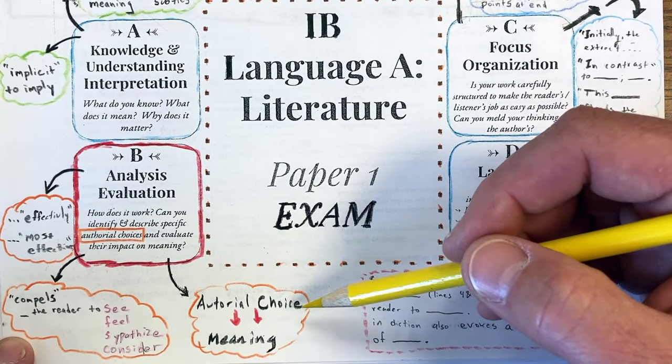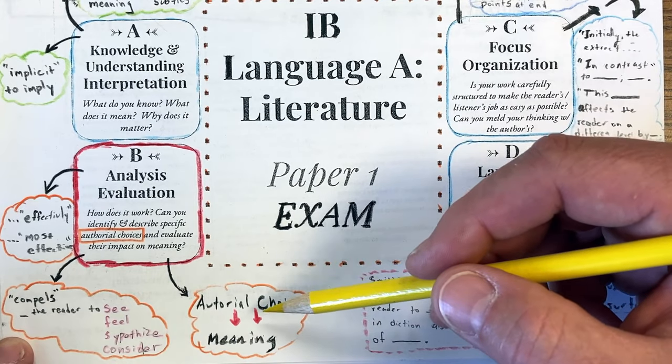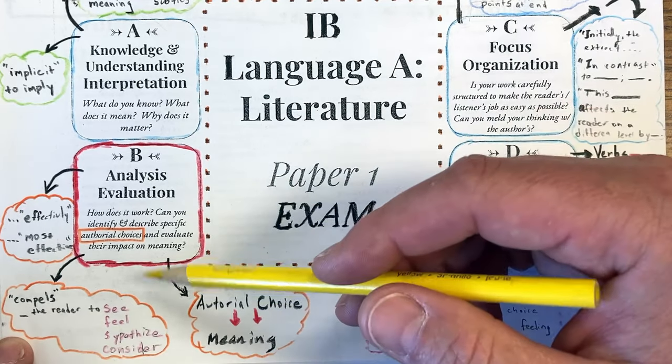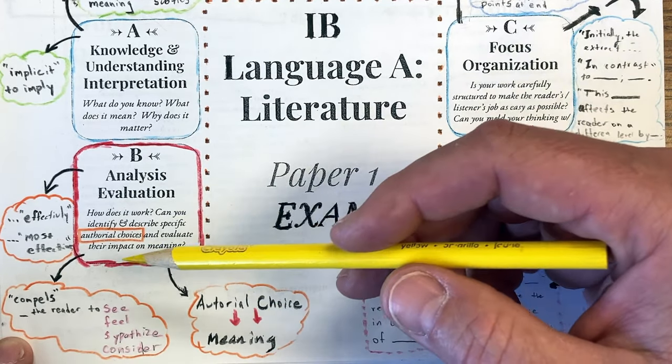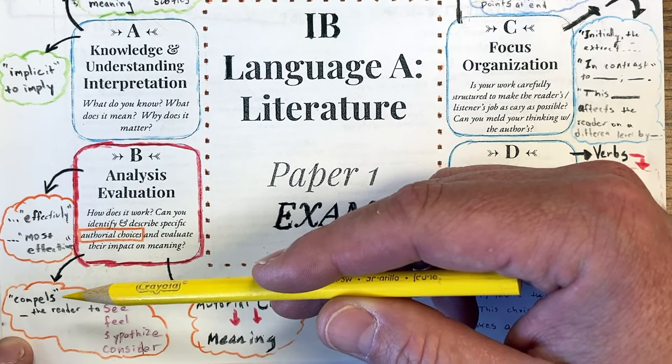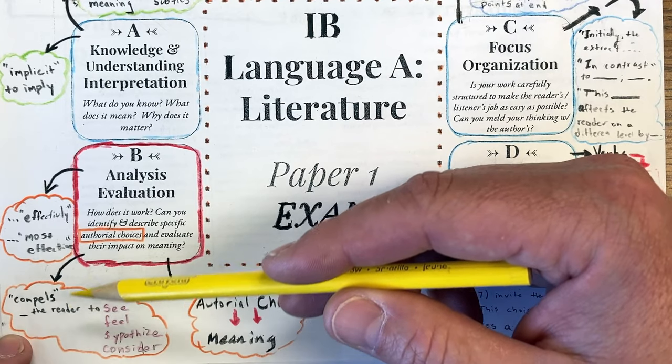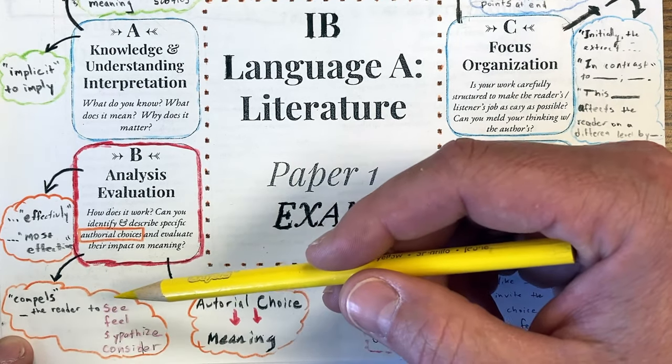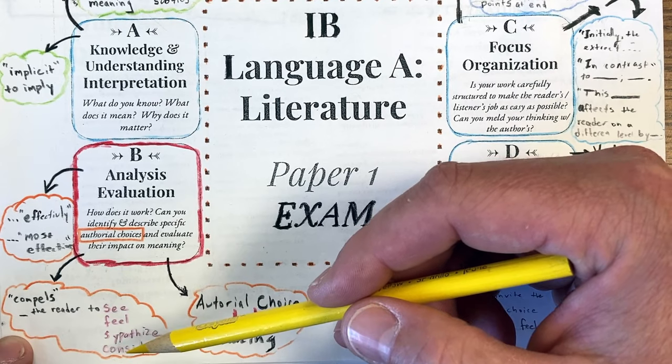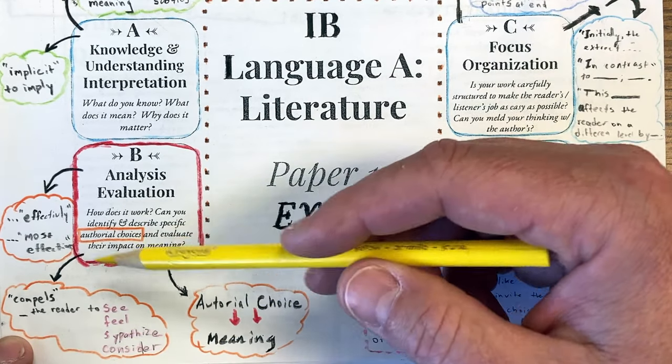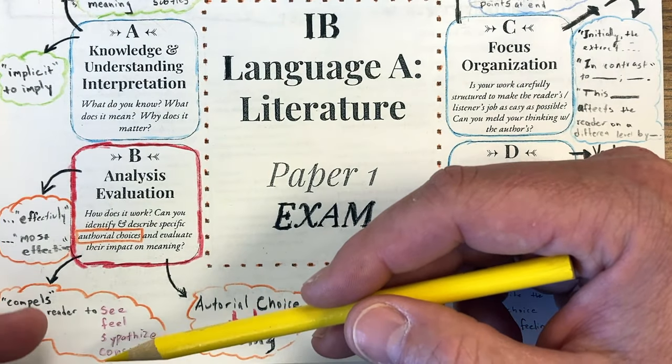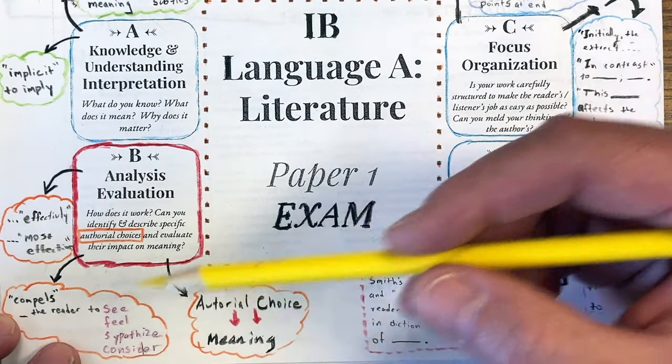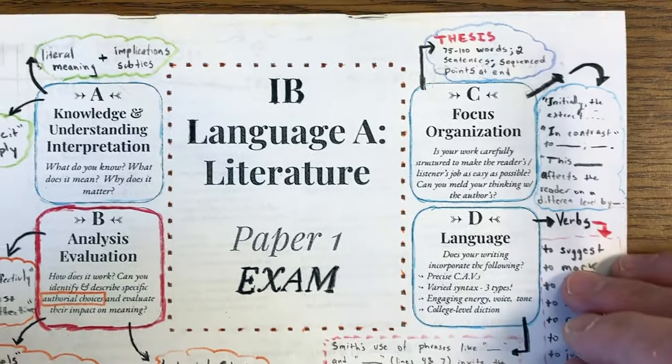Whenever you notice an authorial choice or use language like atmosphere, mood, tone, diction and word choice, you always want to have the following sentence have something to do with meaning. A great verb to use is compels. The idea is this work compels or brings to the reader or offers to the reader or invites the reader to see, feel, sympathize, consider, understand. Those authorial choices are always leading to an experience, either emotional or otherwise, that the reader has in constructing meaning. It's really great, totally complicated, but totally great.